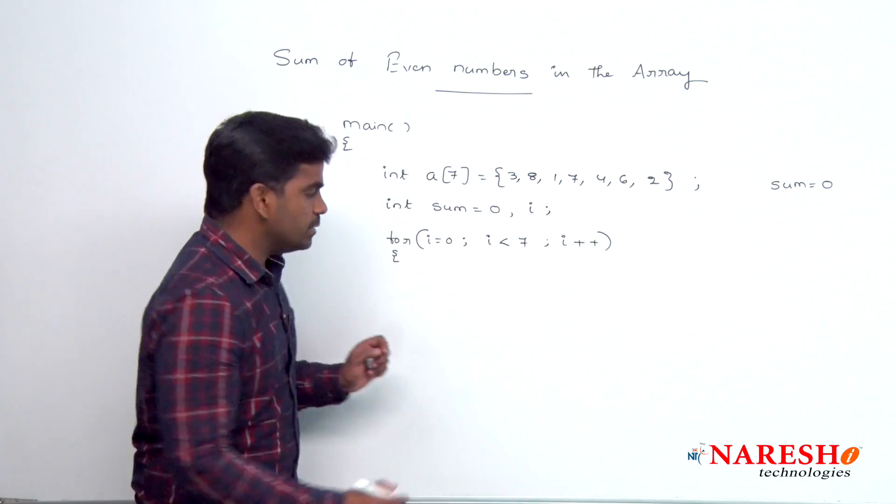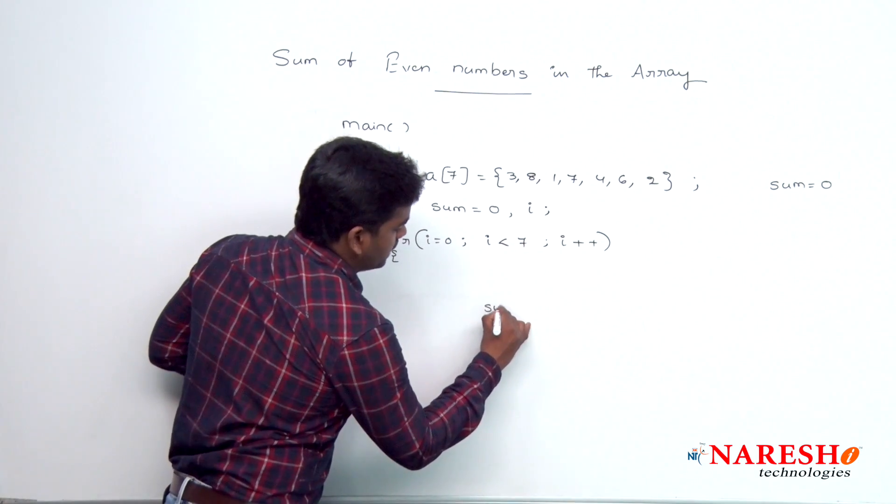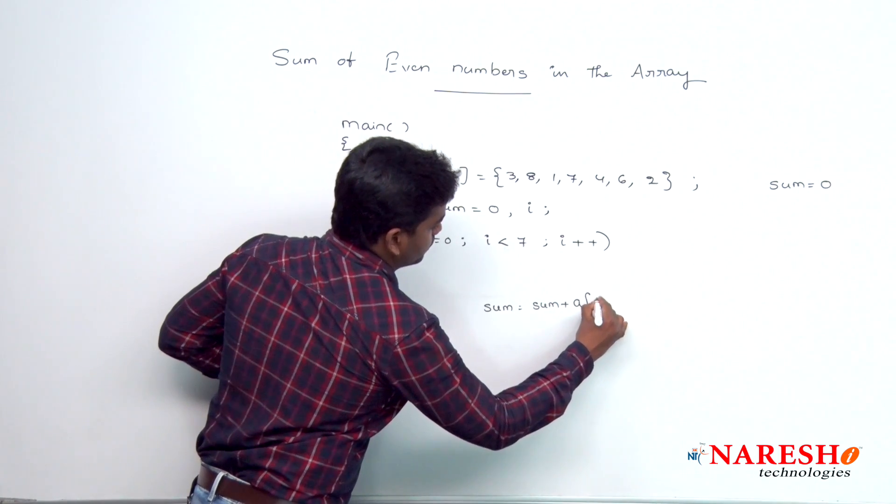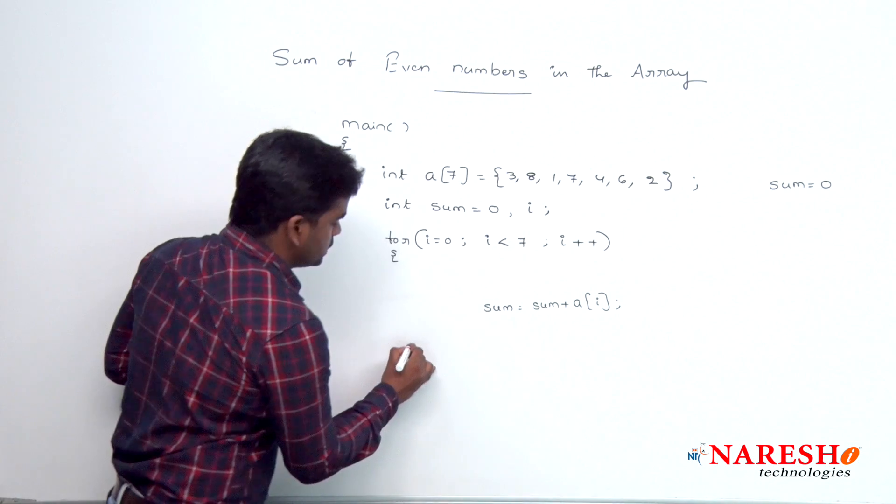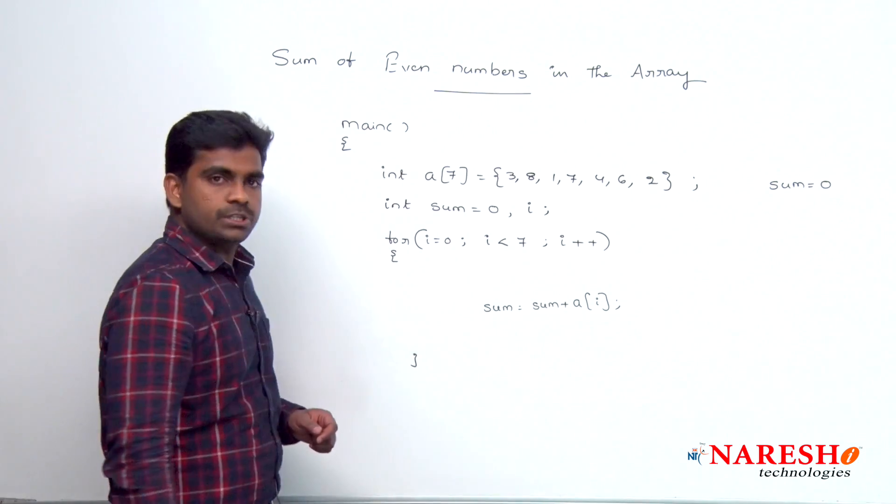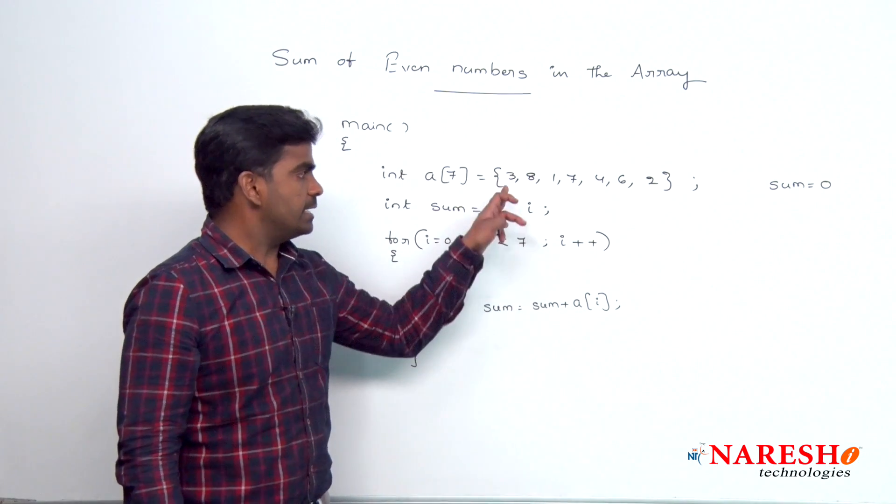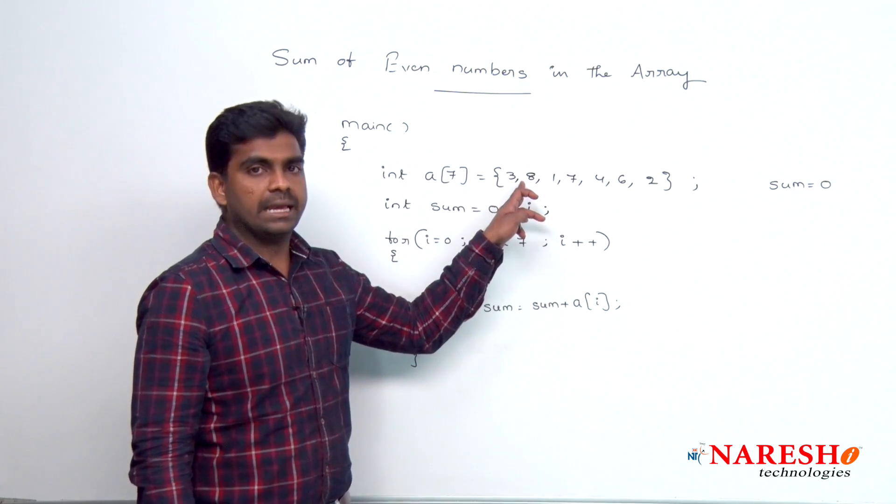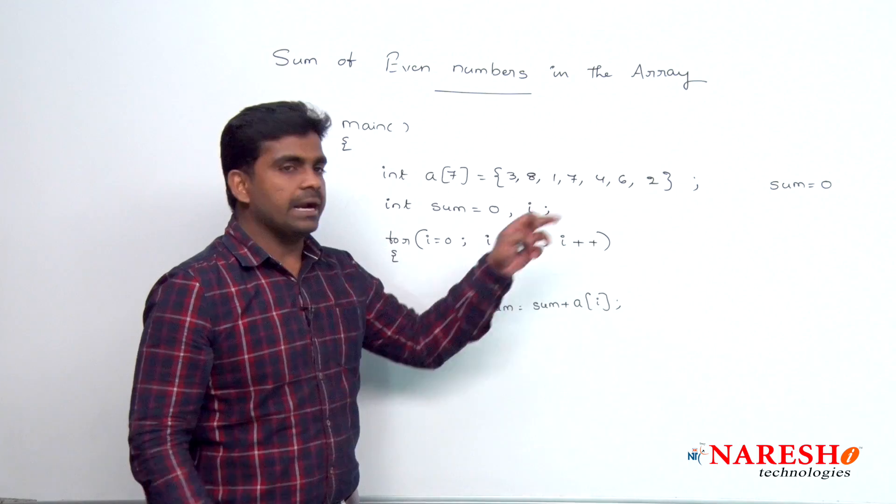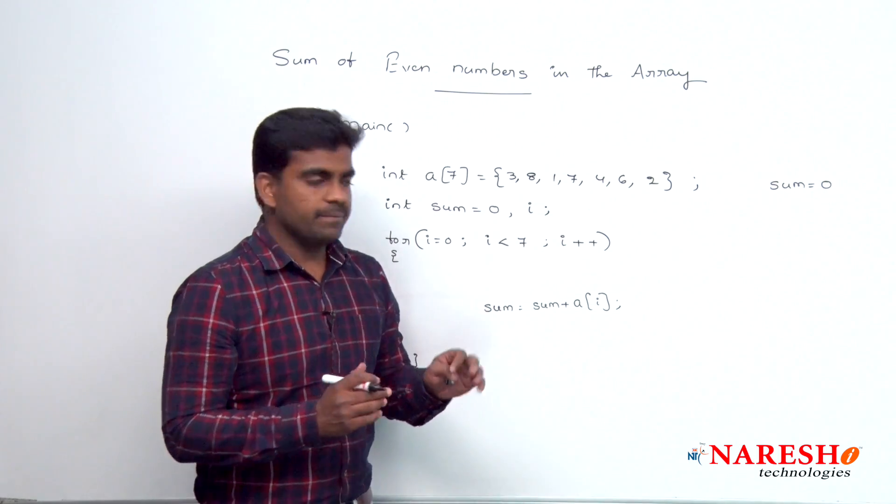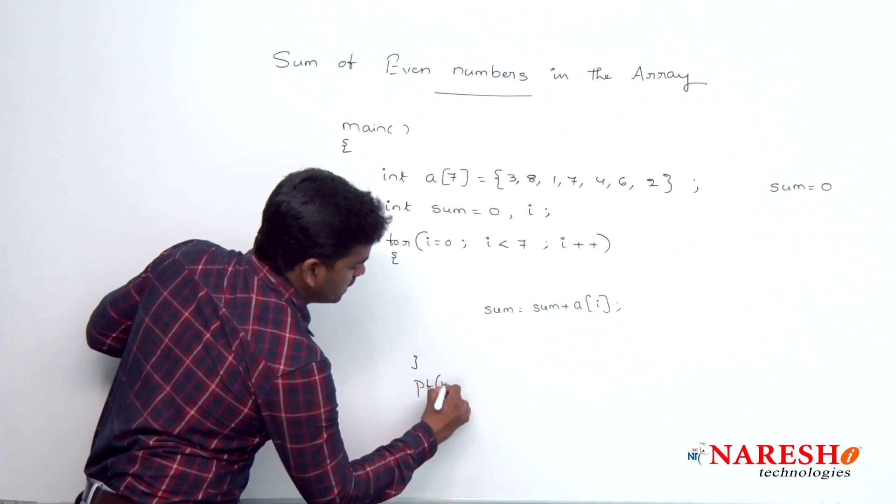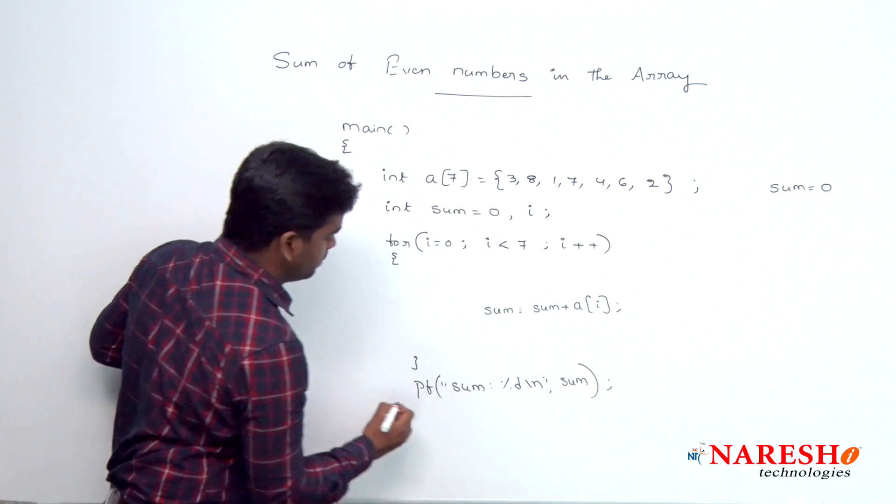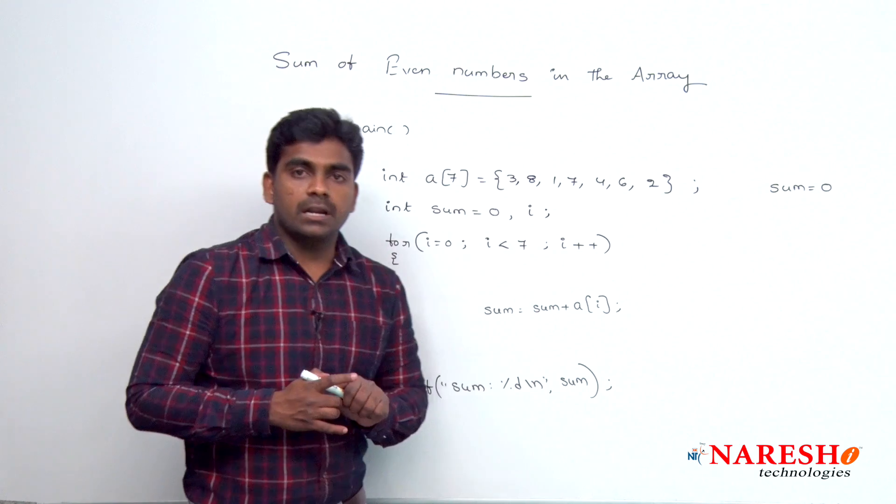If you want to add all the elements means what? Directly we are writing like this, sum is equal to sum plus a of i. When i value is 0, here it is a of 0 will be added, that is 3. Next i value 1, first location element is added 8. Next 1 will be added, 7 will be added, all the elements will be added. And here it is finally, we are printing that sum.